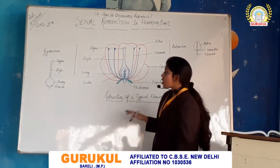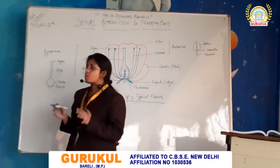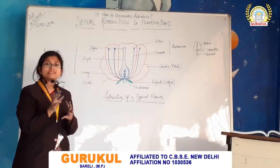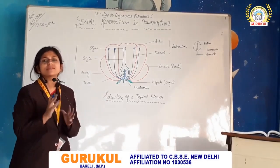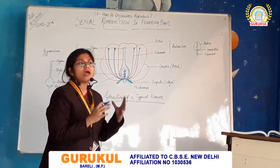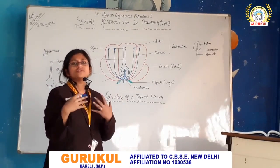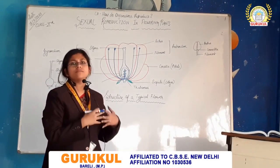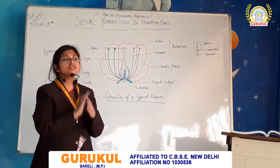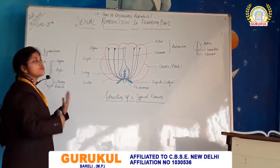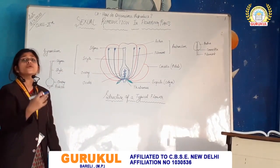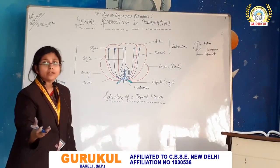In this topic, first we need to understand what is a flowering plant. You have already studied about flowering plants in class 9, in plant kingdom, where Bryophyta, Angiosperms, Gymnosperms, Pteridophyta — all these things you have already gone through. So an Angiosperm is a plant which produces flowers, and the flower is the reproductive part of that plant.